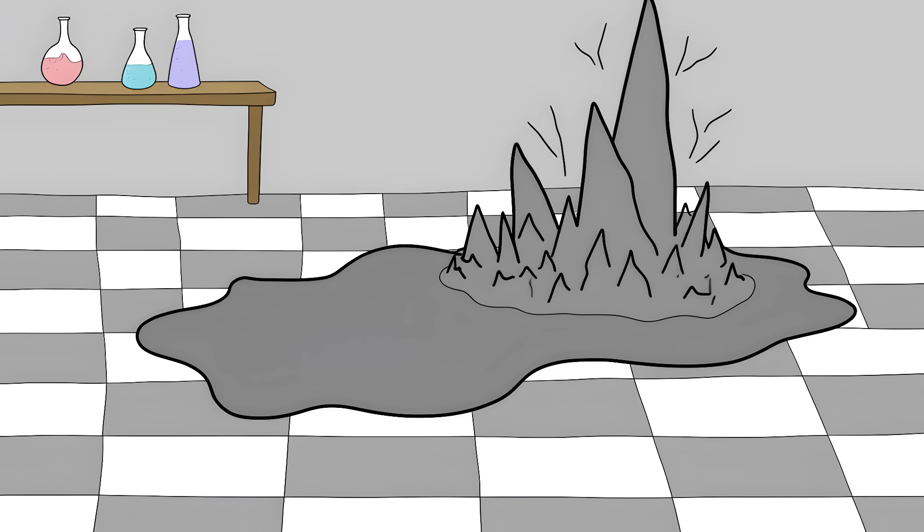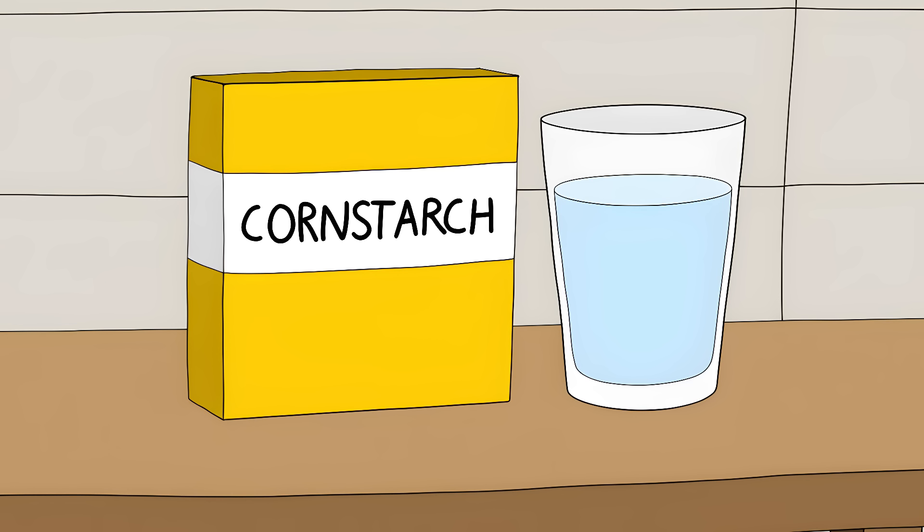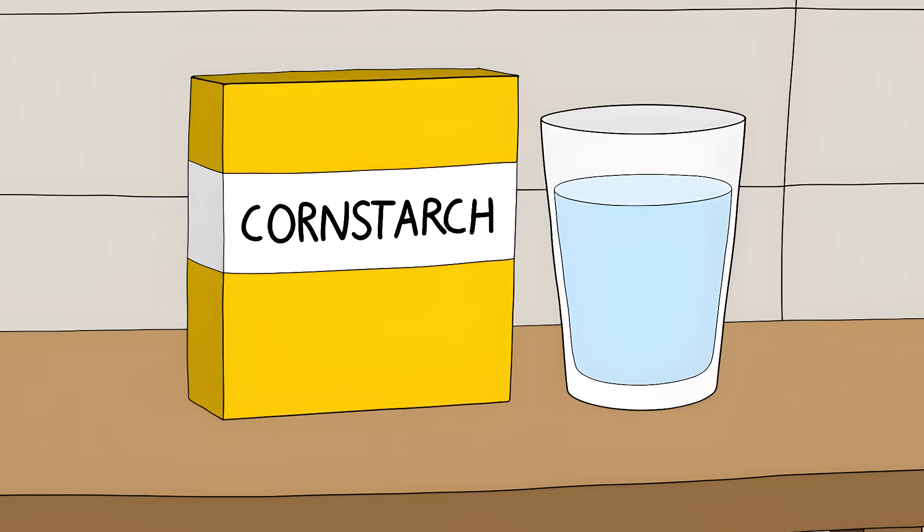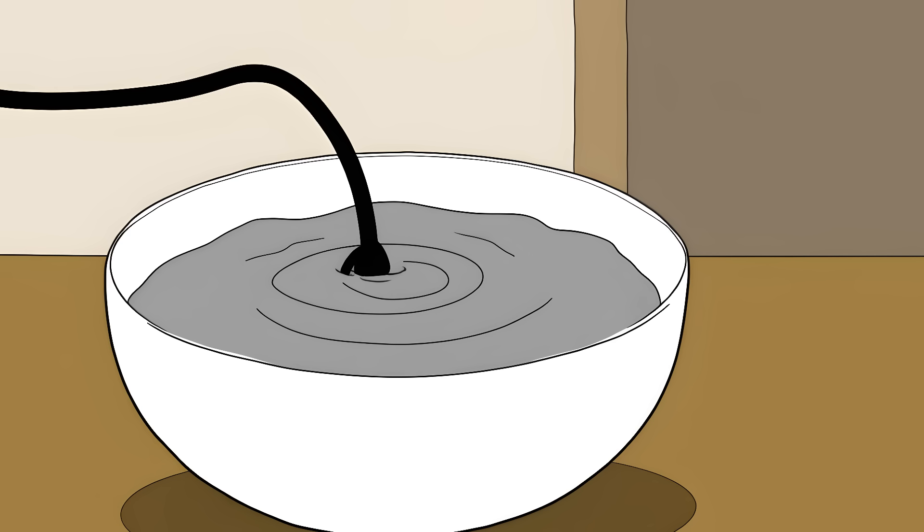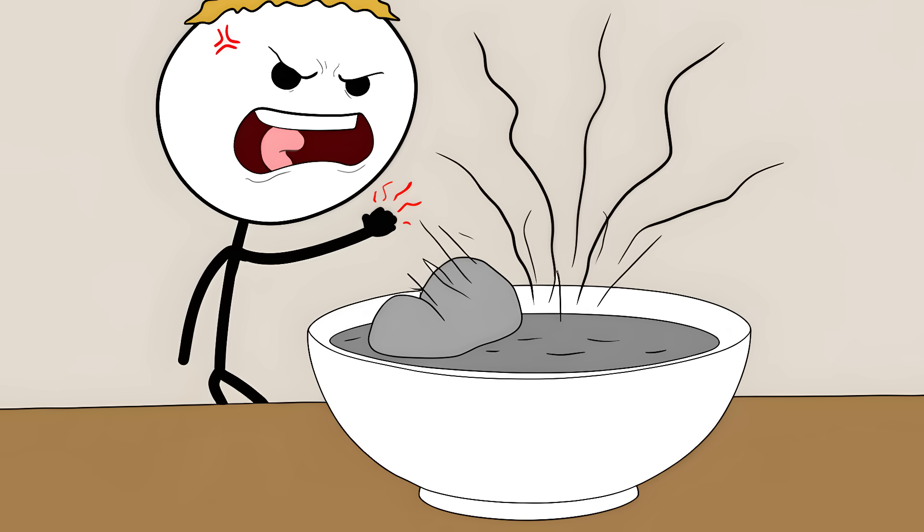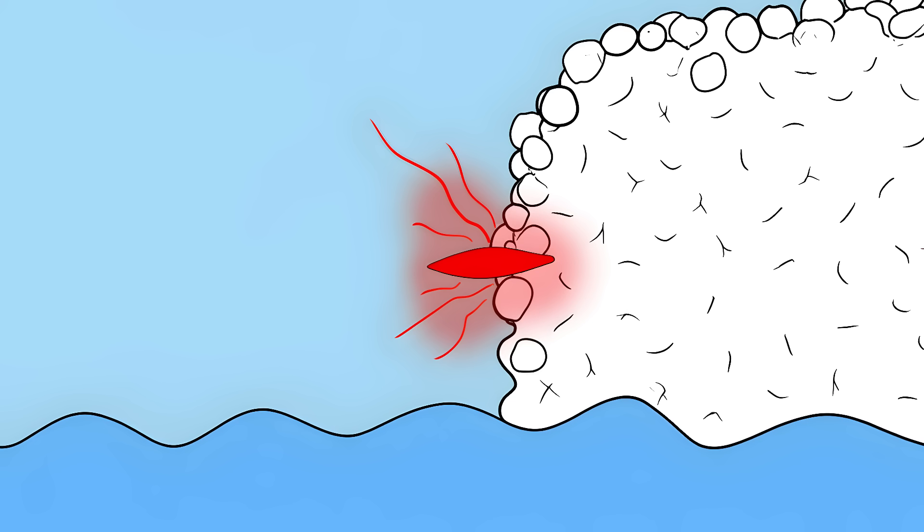These fluids are basically shape-shifters. The most famous example is oobleck, made from cornstarch and water. If you dip your hand in slowly it feels like a normal liquid, but punch it and it instantly becomes as hard as a rock. The tiny cornstarch particles don't have time to get out of the way of a fast moving object, so they lock together.